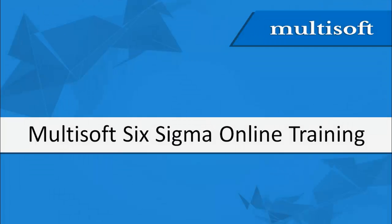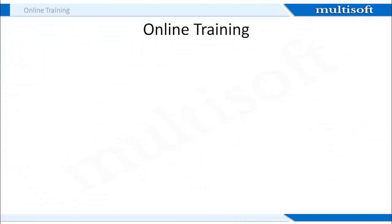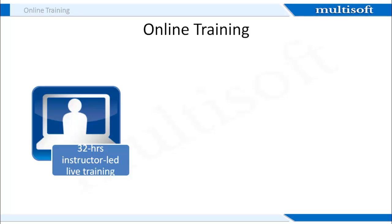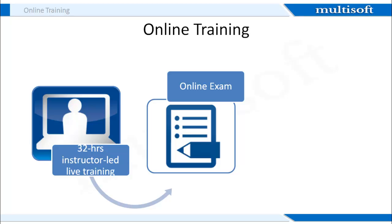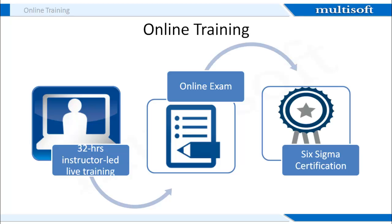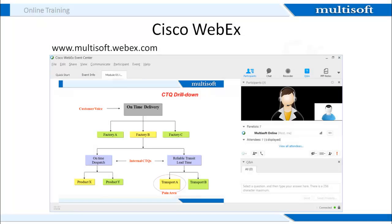Let me now tell you about Multisoft Six Sigma Online Training, how it will happen and other essentials. When you register with us for the program, we will impart 32 hours of training in all. After the course completion, you will need to appear for an online exam, and successfully passing it will certify you as a Six Sigma Greenbelt Professional. We will connect with you as per the pre-decided time and impart training for 32 hours in all. For the exact schedule and each session's duration, you can refer to the training calendar on the Greenbelt Exam Preparation Workshop page.